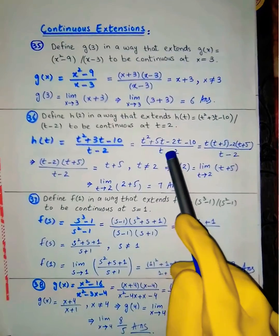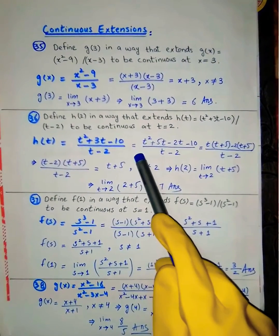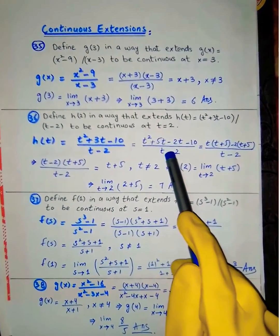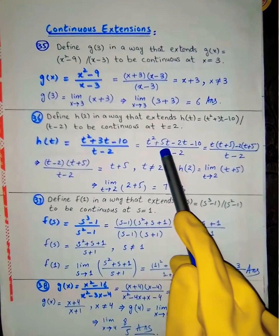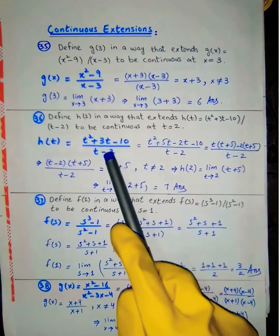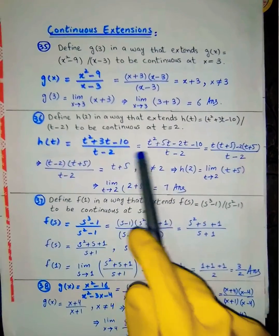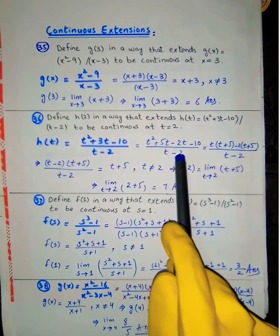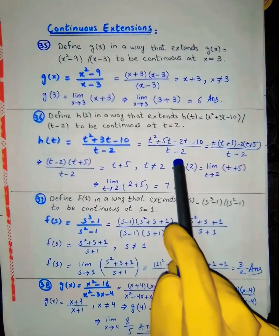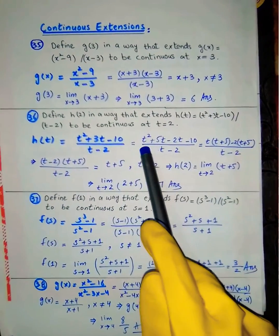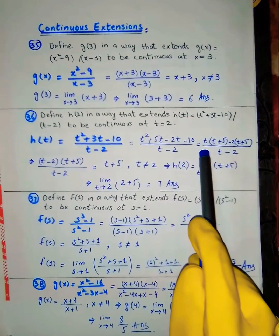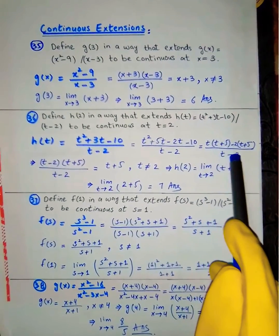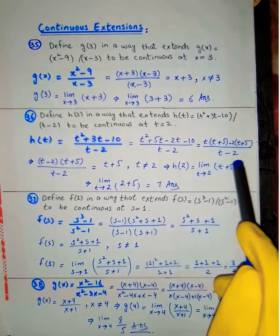We simplify by factoring the numerator. We split 3t as 5t minus 2t: t² + 5t - 2t - 10. Taking common factors gives (t + 5)(t - 2).